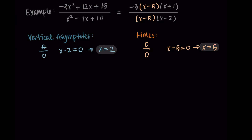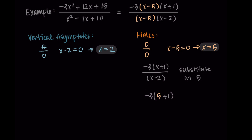I also like to find the y-value that goes with the hole in the graph. We substitute x equals 5 into the equation without the x minus 5 term, so we're looking at negative 3 times x plus 1 divided by x minus 2. Substituting 5: negative 3 times 5 plus 1 divided by 5 minus 2, which is negative 3 times 6 divided by 3, which equals negative 6. So the hole in the graph is at the point 5, negative 6.